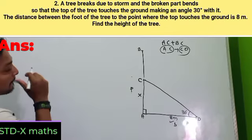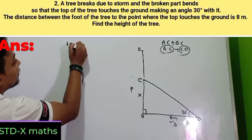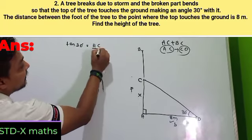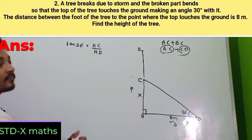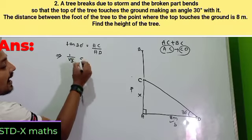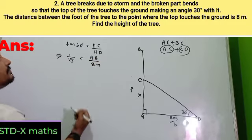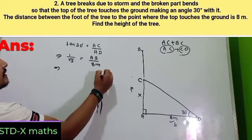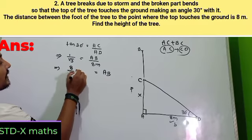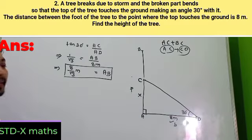Tan 30° = SC/AD. Tan 30° = 1/√3. SC is not given, AD is given as 8 meters. Solving: SC = 8/√3 meters. So I have found SC = 8/√3 meters. Next, I need to find CD.